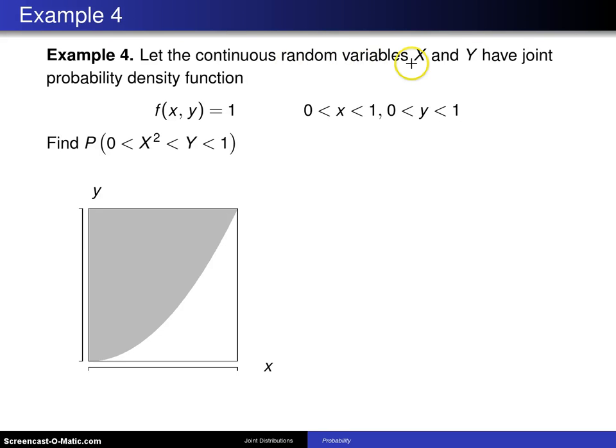Let the continuous random variables X and Y have joint probability density function f(x,y) equals 1 for x values between 0 and 1 and y values between 0 and 1. Find the probability that 0 is less than x squared is less than y is less than 1.